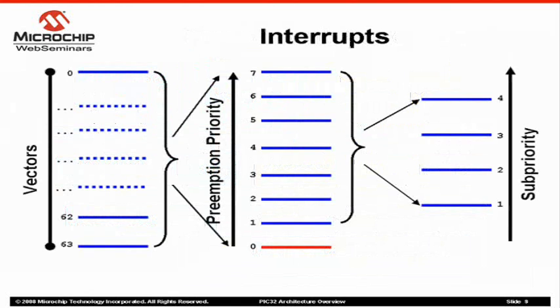The PIC32 offers a flexible interrupt controller. It can be programmed to operate in single-vector mode or multi-vector mode. In single-vector mode, all interrupts use a common vector, while in multi-vector mode, there are a total of 64 vectors. Each vector can have up to eight different preemption priority levels. A value of 7 indicates the highest priority, while a value of 1 indicates the lowest priority, and a value of 0 indicates that the vector is disabled.